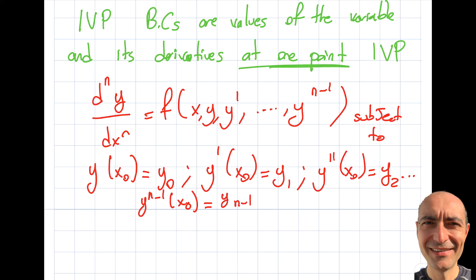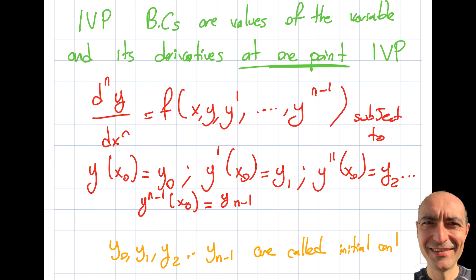If I have an nth-order differential equation, I will need the same number of boundary conditions. If the order of the differential equation is four, I need four boundary conditions. I start indexing from zero and end at n minus one, so the total number of boundary conditions equals the order of the differential equation. These are called initial conditions, abbreviated IC.